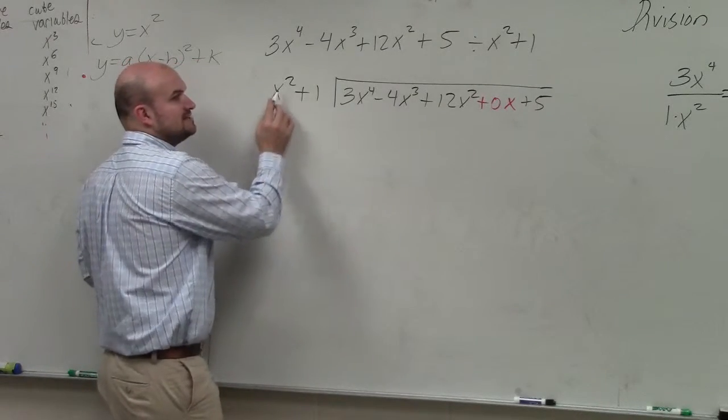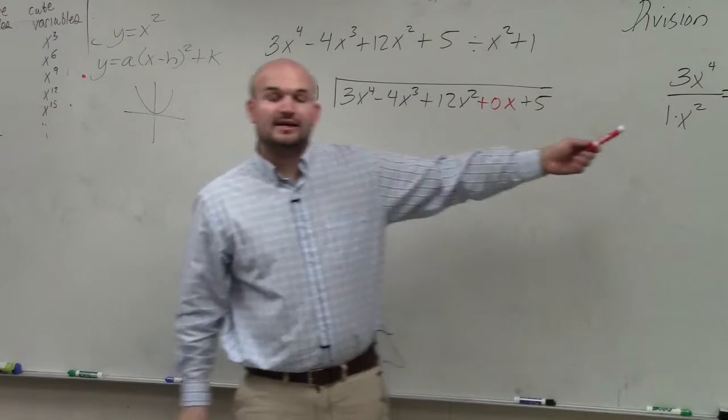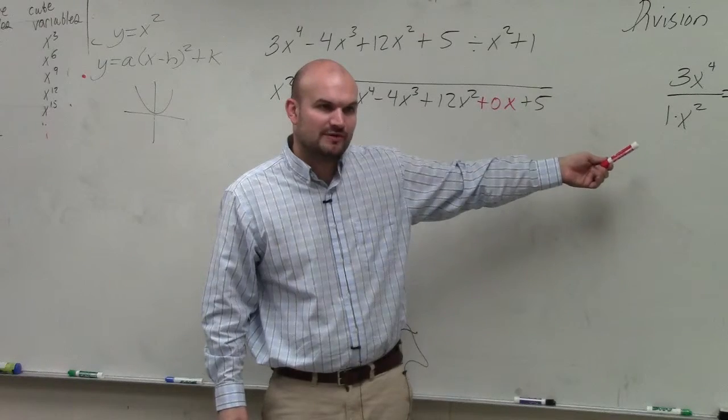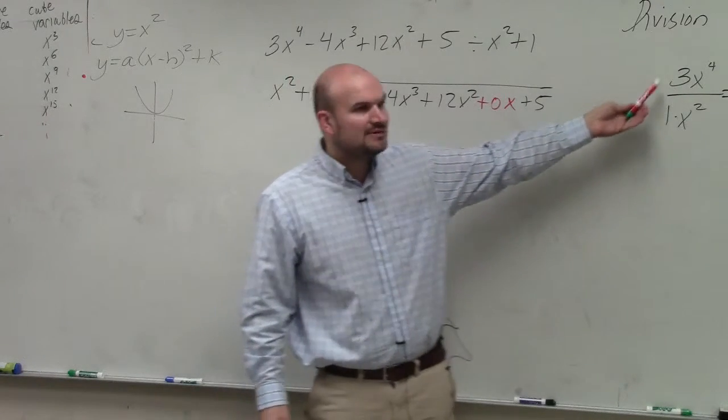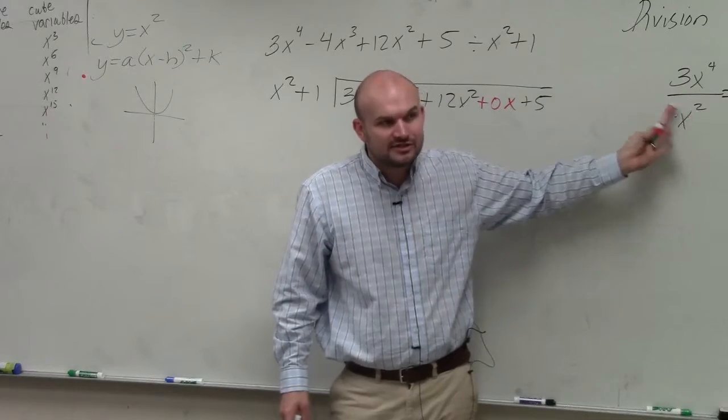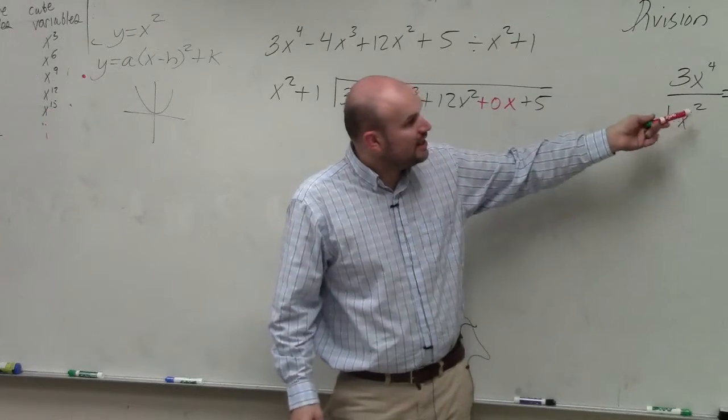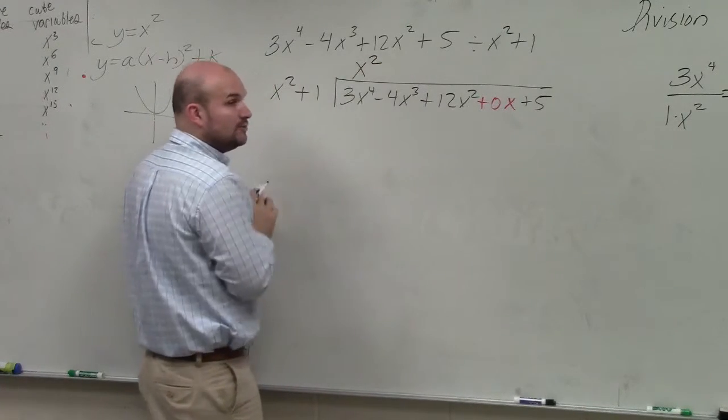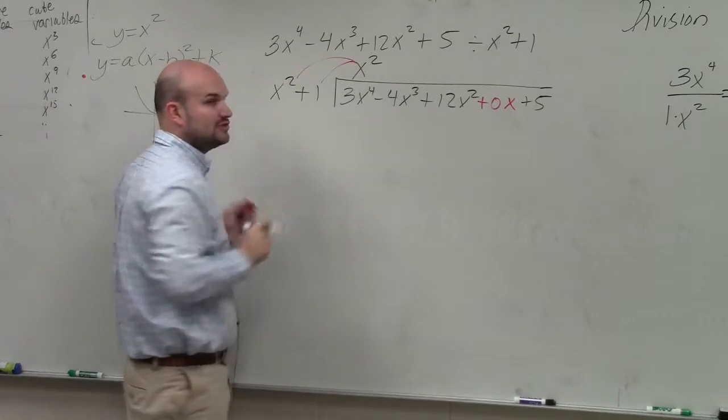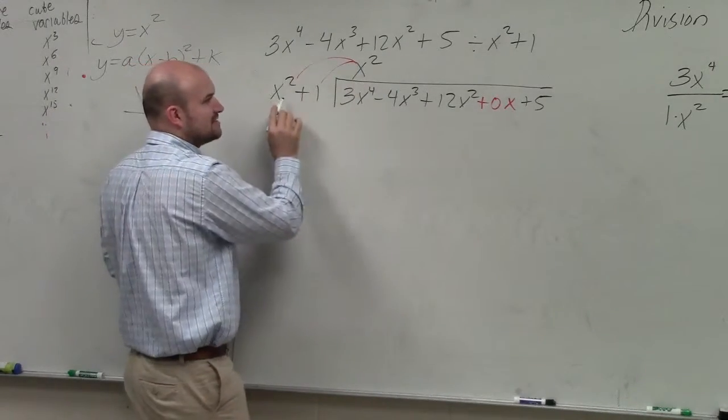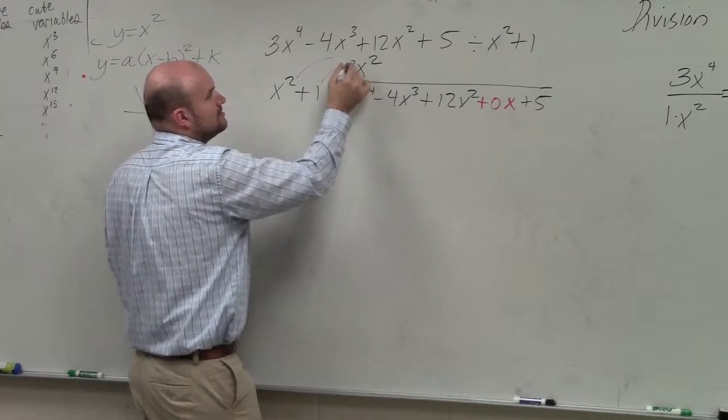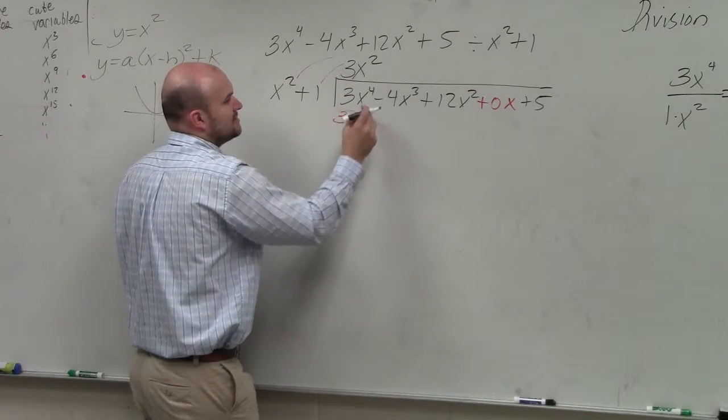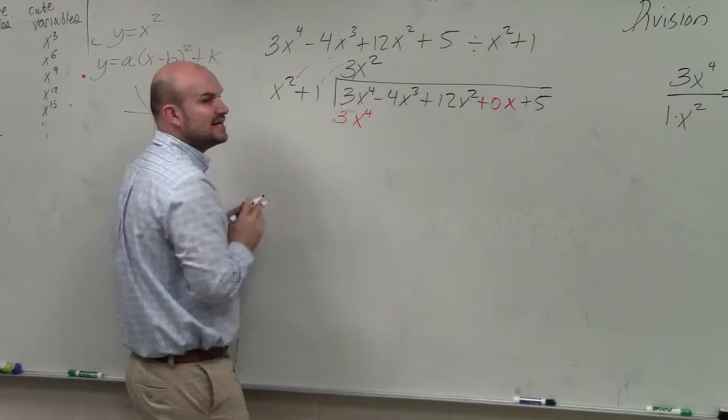So now we're asking ourselves, how many times does x squared divide into 3x to the fourth? If you're having trouble understanding this, it's first important not to talk when we're going over the problem. And secondly, I would just say write it off to the side. Just do your math on a separate section. Our x squared goes into 3x to the fourth 3x squared times. Now you take that answer and you multiply it by both terms in your divisor. x squared times—oops, I'm sorry, that goes in there 3x squared times, right?